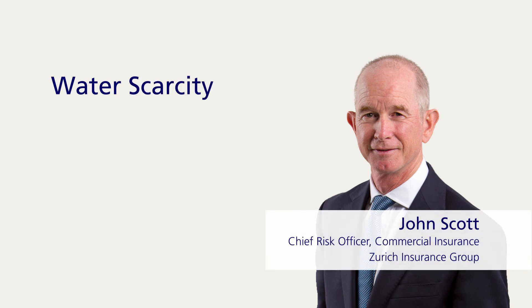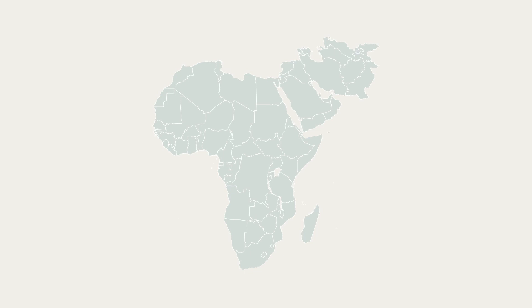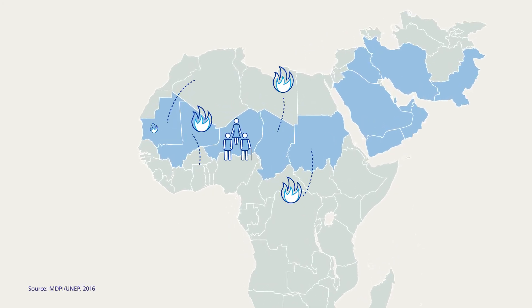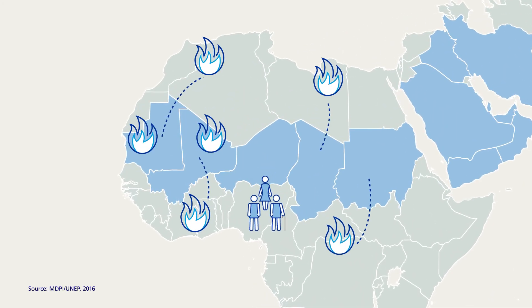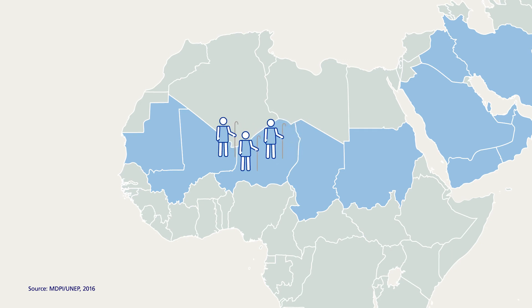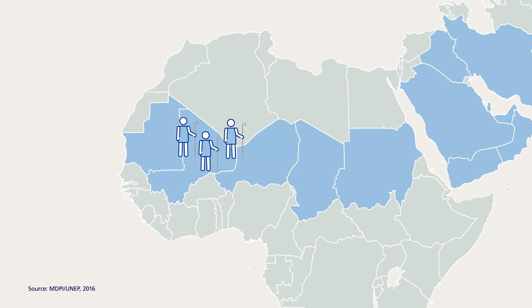Environmental risks not only impact the business world, but also our lives. Water scarcity due to climate change could cost some regions up to 6% of their GDP. Lack of water can also lead to conflict and migration. In the Western Sahel, water scarcity has led pastoralists to migrate to new areas, but with a lack of resources, these nomadic herders are now coming into conflict with farmers.